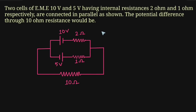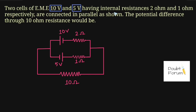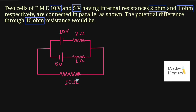Hello friends, welcome to Doubt Forum. This question is: two cells of EMF 10 volt and 5 volt, having internal resistances 2 ohm and 1 ohm respectively, are connected in parallel as shown in this figure. We have to find out the potential difference across the 10 ohm resistor, which is connected across this combination of cells.